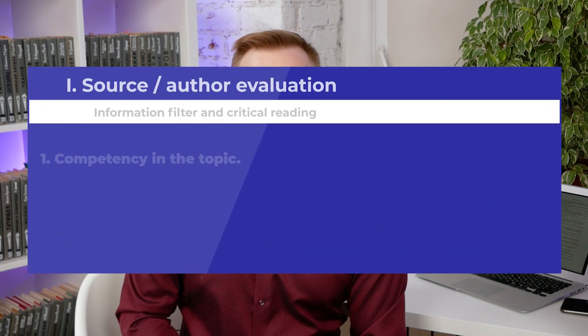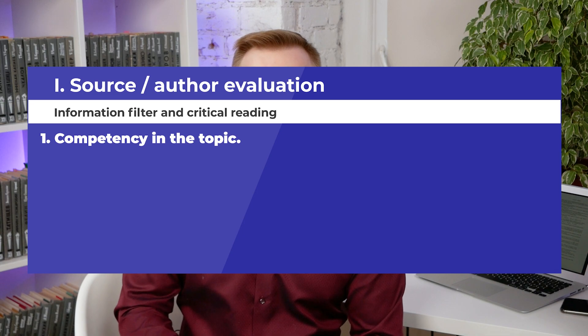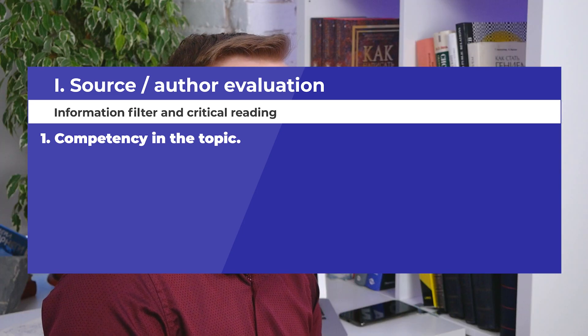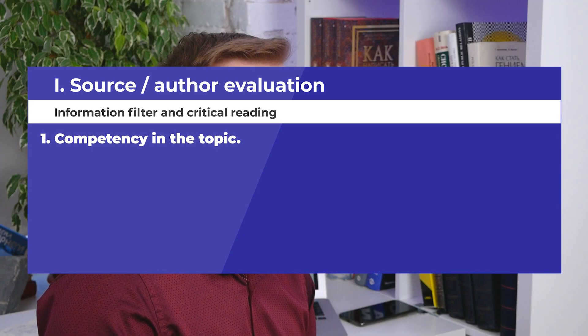There are three groups of parameters to be considered. The first group is source or author evaluation. The first point is competency in the topic you are interested in. Anyone can easily imagine a physicist who wrote an article on political issues, but he or she is not an expert in politics, and we cannot consider such an article as a reliable source of information.